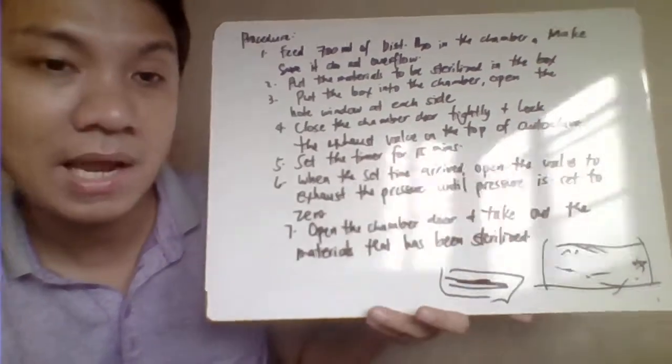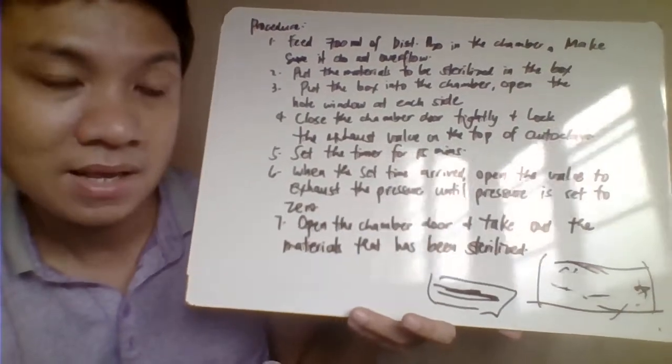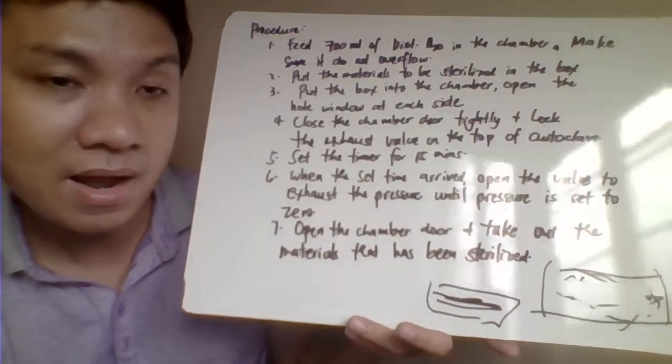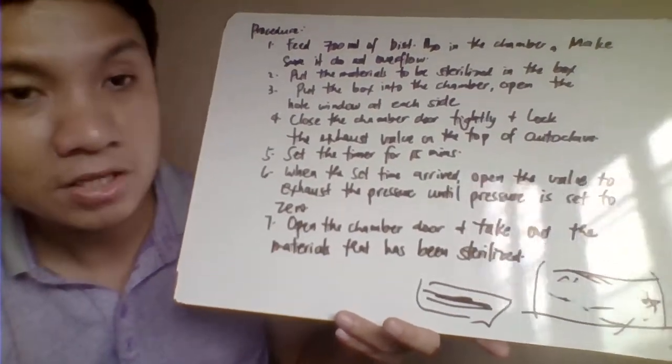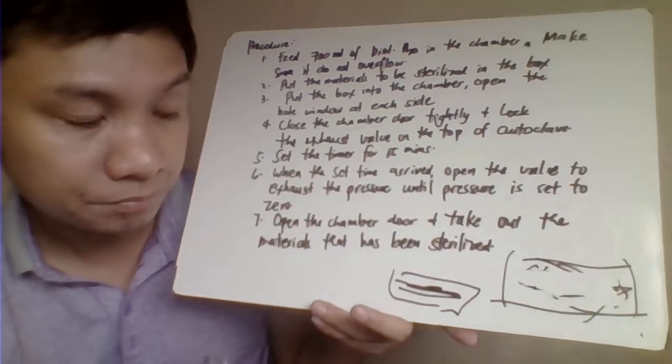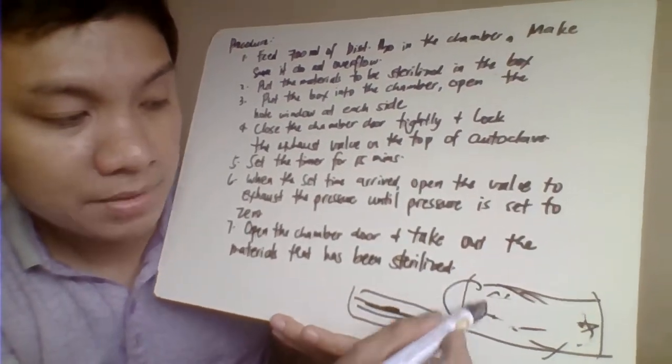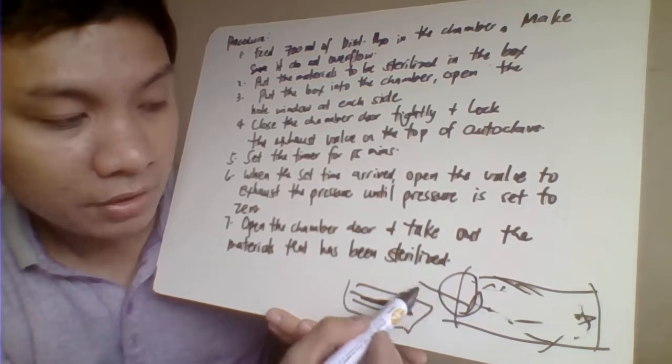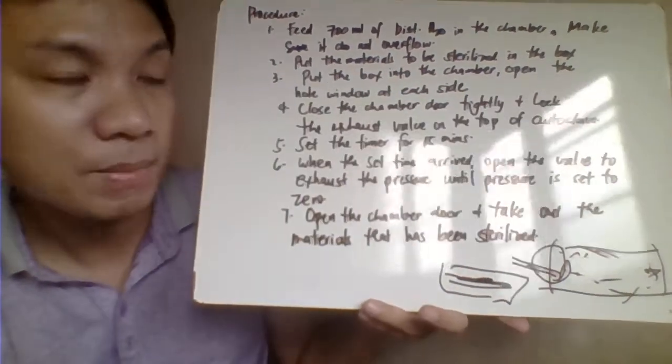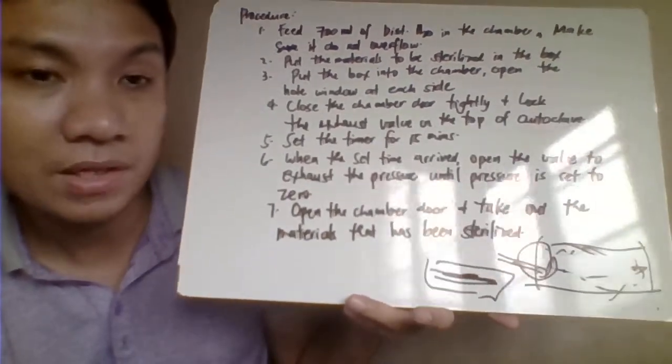The box will contain your materials like melted agar or petri dishes or glassware. Open this chamber and add water, approximately 700 ml of distilled water.